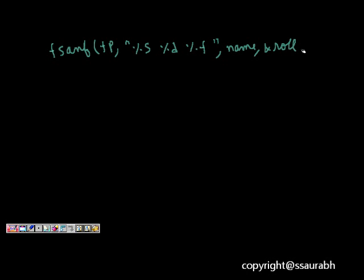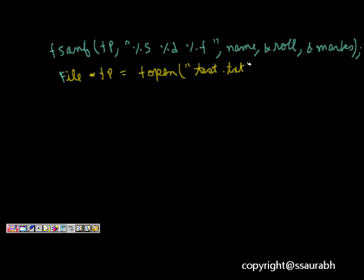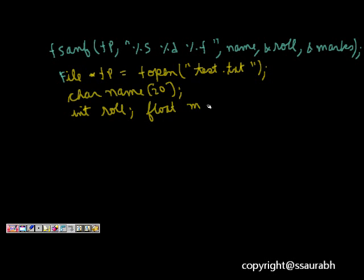So it will be ampersand role and ampersand marks. So this will be the command and of course we will define a few things before writing this line. We will have the file which is FILE *fp equals fopen test.txt wherever that file was. Then we will write char name[20], int role and float marks.